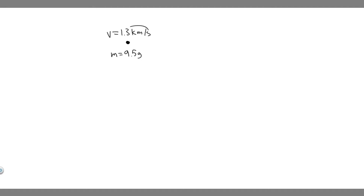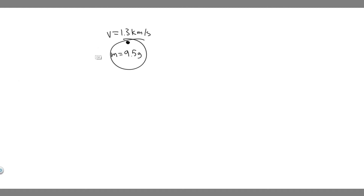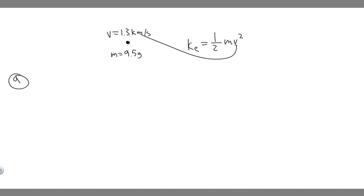So what we have here is this bullet traveling 1.3 kilometers per second, and we know its mass is 9.5 grams. What we're trying to find, for A at least, is the kinetic energy in joules. In order to find kinetic energy, you need to know its formula. Kinetic energy, or KE, is equal to one-half mv squared, where m is the mass of the object and v is the velocity of the object.